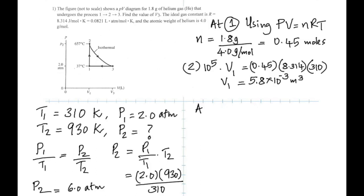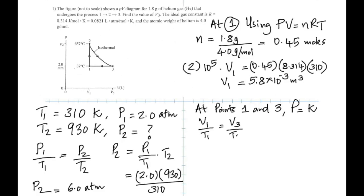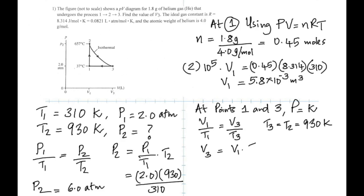Knowing V1, we can find V3. Since process 3→1 is isobaric (constant pressure), V/T is constant, so V1/T1 = V3/T3. An important point: since process 2→3 is isothermal, T2 = T3 = 930 Kelvin. Substituting gives V3 as approximately 10 × 10⁻³ m³.